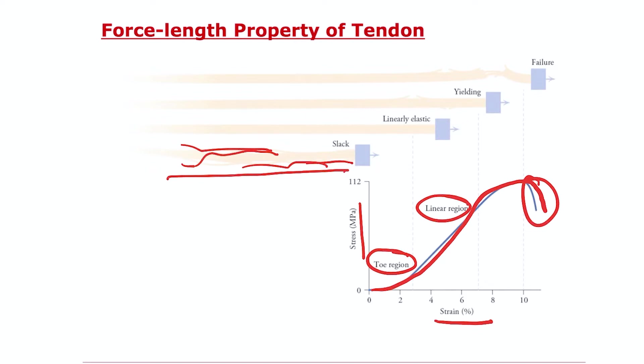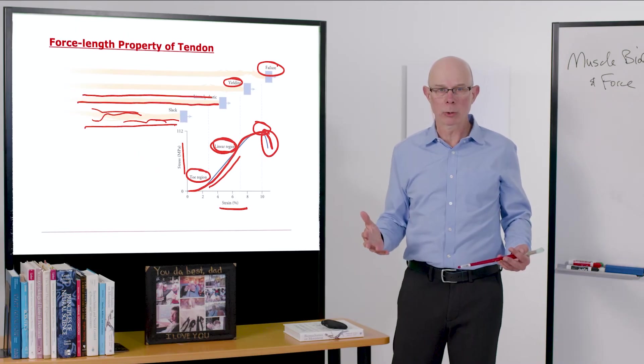You start to get into this linear region where all of the fibrils within tendon are generating force. When we're getting to this region right here and we're rolling over, the tendon is starting to yield and then finally it breaks here. So tendon has a nonlinear force-length relationship.